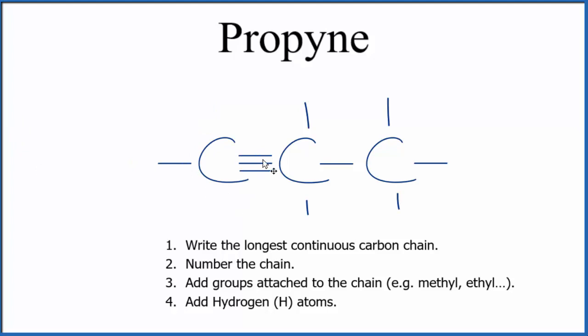So this carbon here has one, two, three, four bonds. This carbon here has one, two, three, four, five, six. So we need to get rid of these hydrogens as well. Now this carbon here is bonded to four things and so is this. So this is the structural formula for propyne.